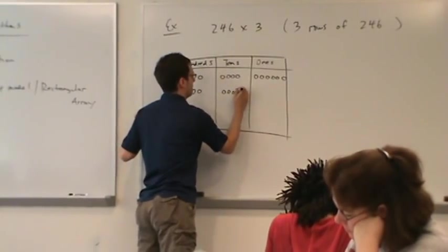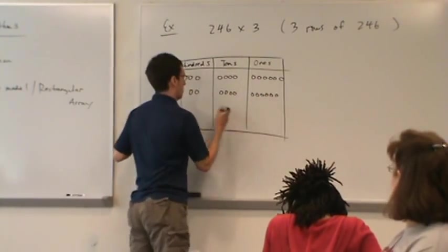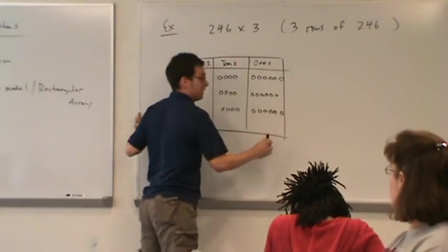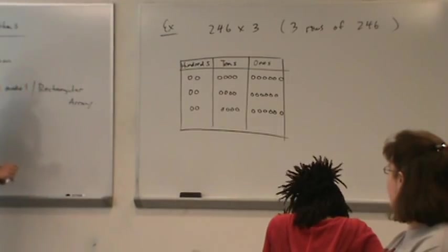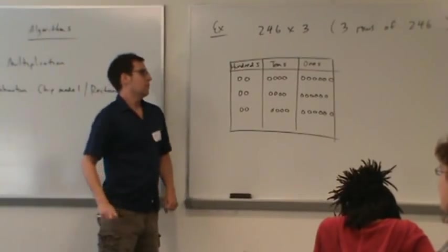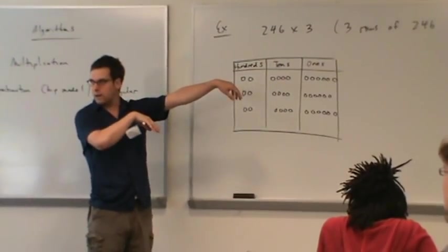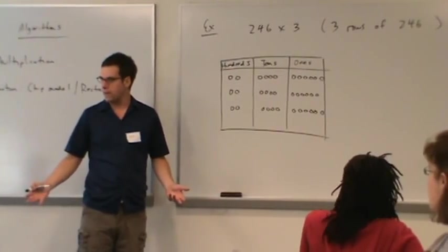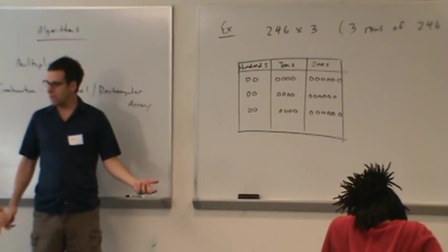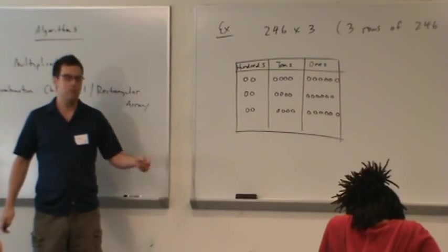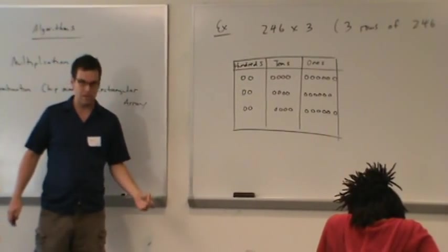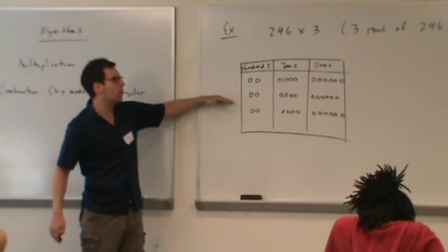Sometimes my college students think they're a little cleverer than they are. They'll just throw a bunch of chips haphazardly on this model because they're so focused on the right answer. They'll get the right number coming out, but what they've drawn doesn't illustrate multiplication. Multiplication is illustrated by the fact that you have three rows of 246.